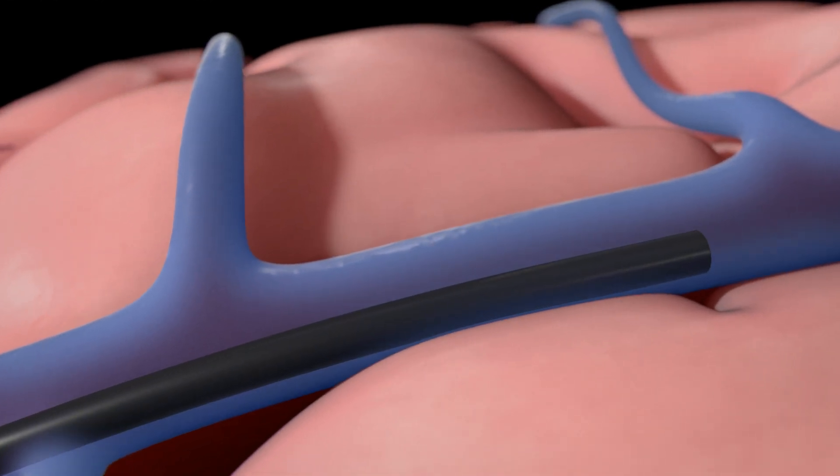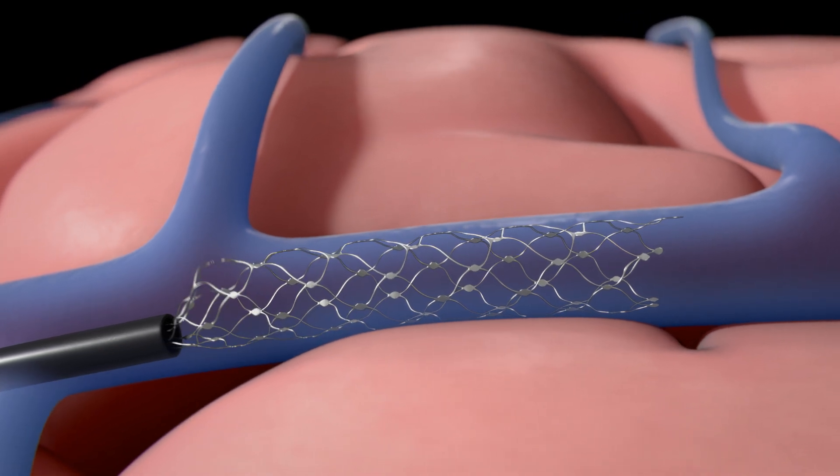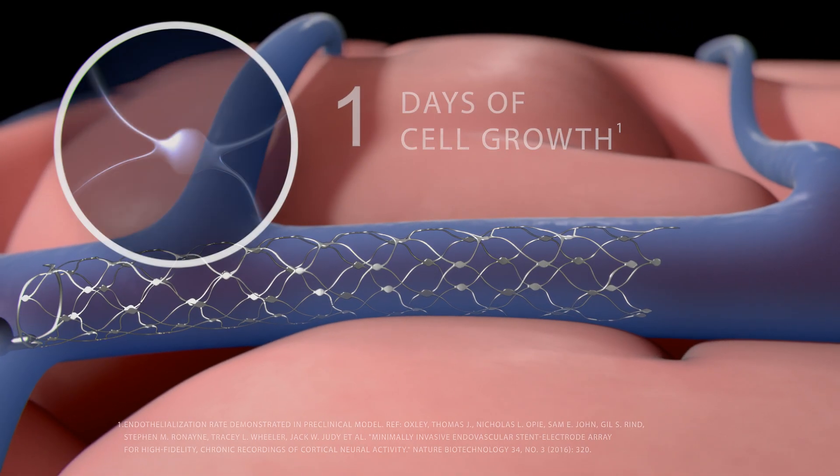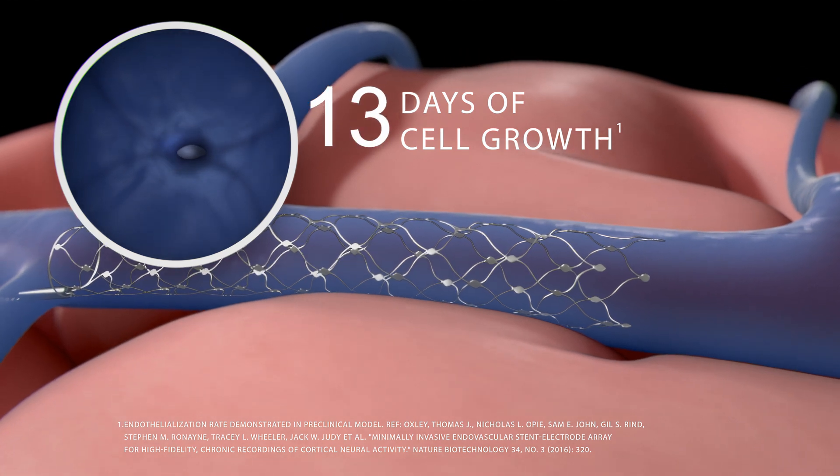The sensors are built onto a self-expanding stent that engages into the wall of the vein and which is designed to maintain blood flow. Over time, cells may gradually grow over the sensors and incorporate them into the tissue.